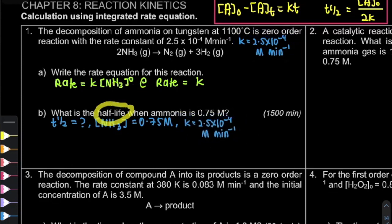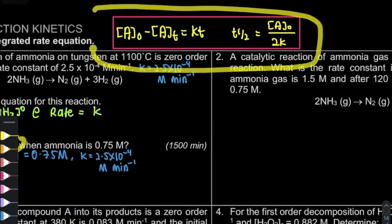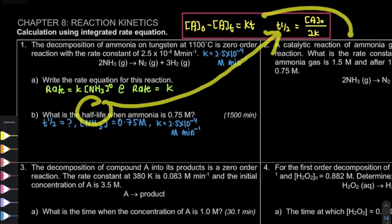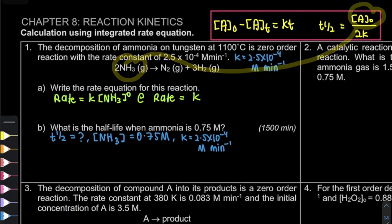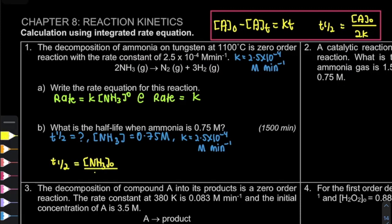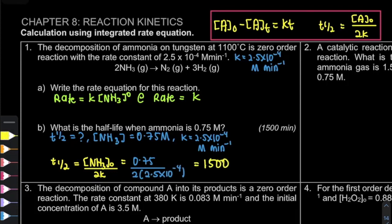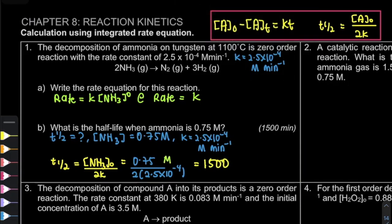We're going to use the formula: half-life = [NH₃]₀ divided by 2K. Substituting the values, we get the answer of 1500. For the unit: concentration is in molar and K is in molar per minute, so the unit cancels to give minutes.